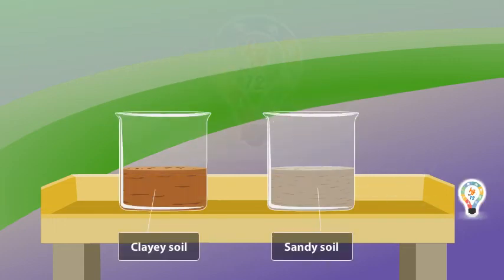Water percolation rate of the soil refers to the rate of the movement of water through the soil as it passes through the small holes or spaces between the particles of the soil.